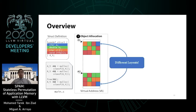SPAM also guarantees that each allocation will have its own permutation. For example, even though two allocations A1 and A2 are of the same type A of T, their layout is different. Furthermore, we can do this without any metadata, which is very useful from a performance and security standpoint, as we will show later.